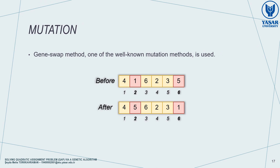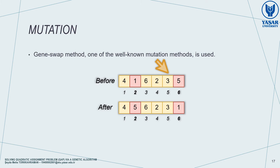Mutation is another genetic algorithm operator that increases diversity. It is applied to each gene of each individual in the population depending upon a probability parameter. We used one of the well-known mutation methods: the gene swap method. If we look at the sample gene swap mutation operation in the figure, we can see that the genes at index 2 and 6 are selected and interchanged.